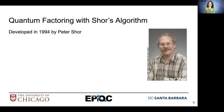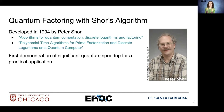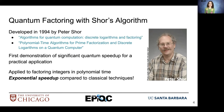Quantum factoring — Shor's algorithm — was developed in 1994 by Peter Shor. It was the first demonstration of a significant quantum speedup for a practical application, and it's applied to factoring integers in polynomial time. This provides an exponential speedup as compared to the best classical techniques with respect to time.